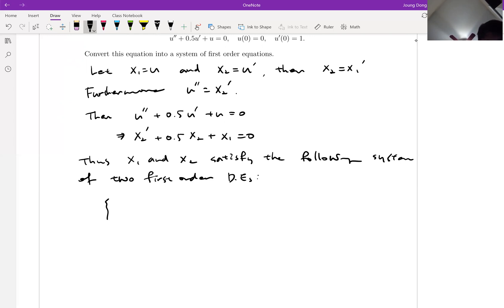x1 prime is x2, and also x2 prime is equal to, let me move this part to the right hand side, negative 0.5 x2 minus x1. Then we already